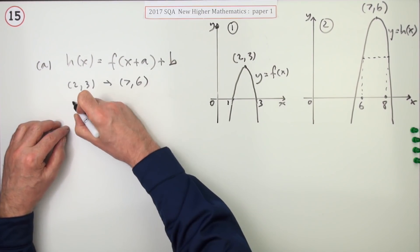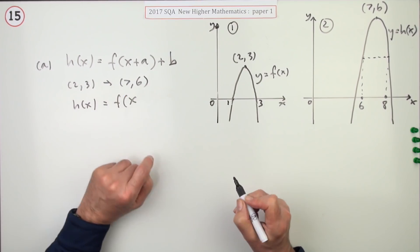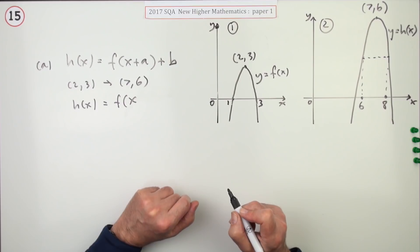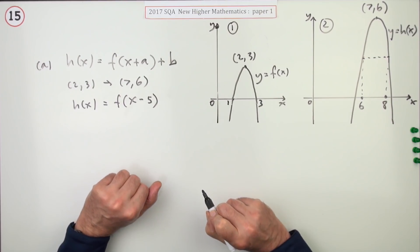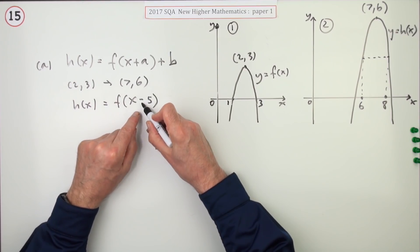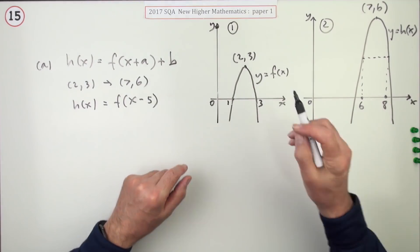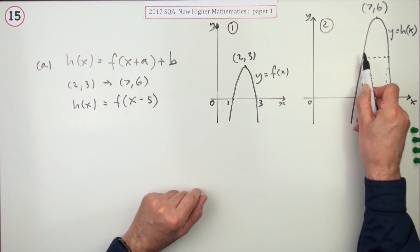Now we'll just write down what h of x is then. So h of x is f of x. Now if it's gone along 5, you put x minus 5 there. You probably just remember it as do the opposite of whatever it does in the x direction.